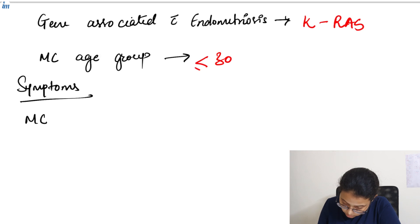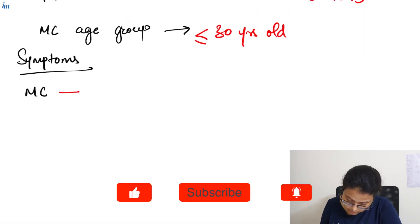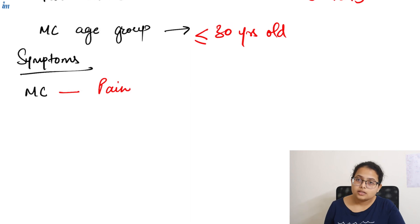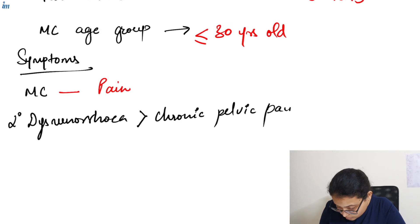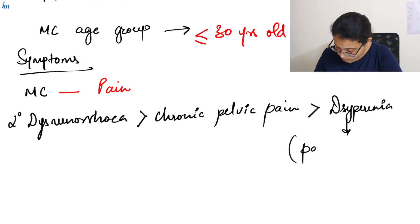Now the symptoms. Most common symptom in endometriosis is pain. There are different types of pain seen in endometriosis. First is secondary dysmenorrhea, followed by chronic pelvic pain, followed by dyspareunia which is pain during intercourse, and lower backache.